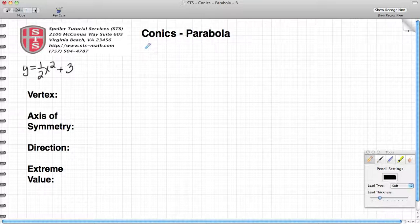Put that into a more standard form by subtracting three from both sides. It's going to leave us with y minus three is equal to one half x squared. Now we're able to see easily or more clearly what the vertex is.